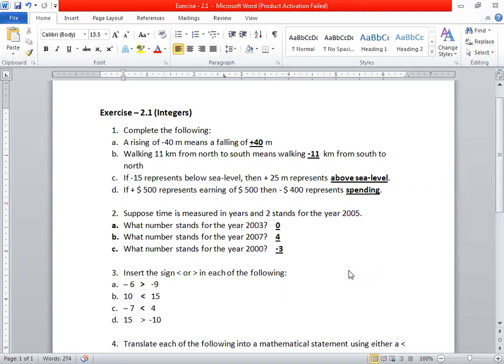A rising of minus 40 meters means a falling of how much? Because rising and falling are opposites, minus 40 representing rising means plus 40 represents falling. Just opposite.